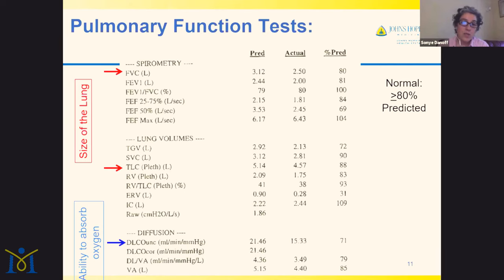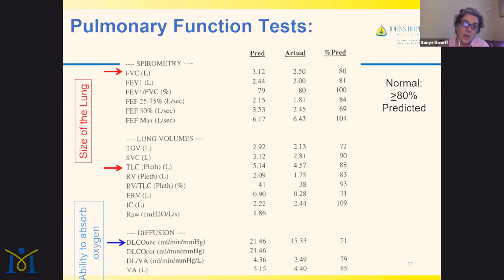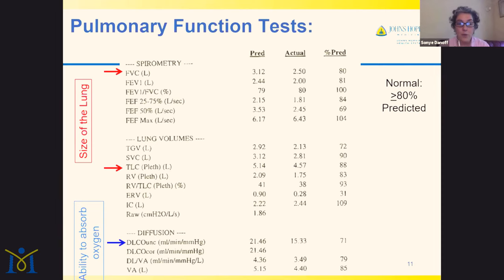In this example, the FVC at 80% predicted is normal. However, the diffusing capacity is only 71% predicted, which would be considered slightly abnormal. Following these numbers over time gives you a really good idea of what's happening to the lung. Inflammation and scarring in the lung tend to make it stiff, which makes it smaller, and they make the diffusion less efficient, so the DLCO goes down. Following these over time with your doctor, you'll understand whether your disease is stable, getting better, or possibly getting worse.